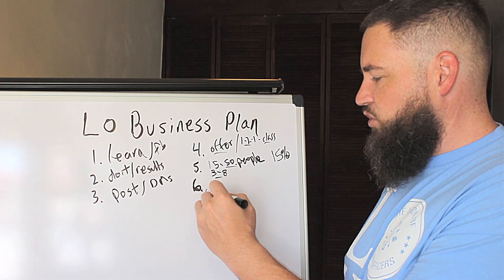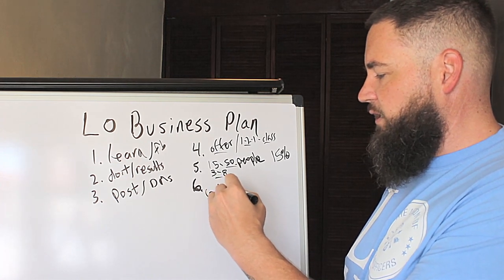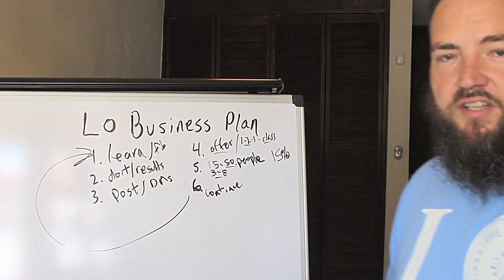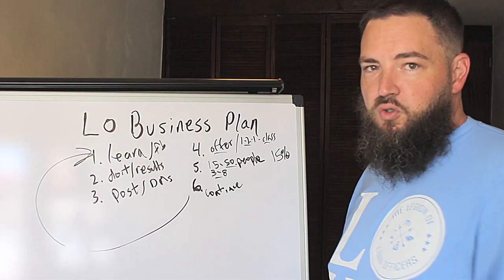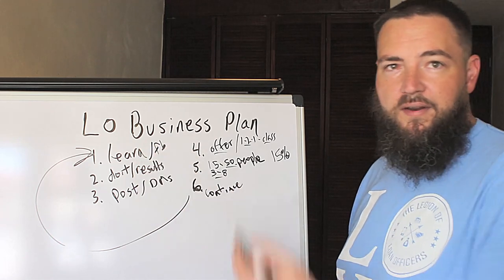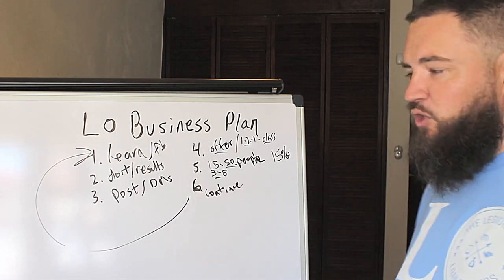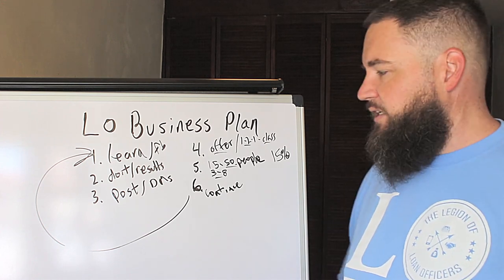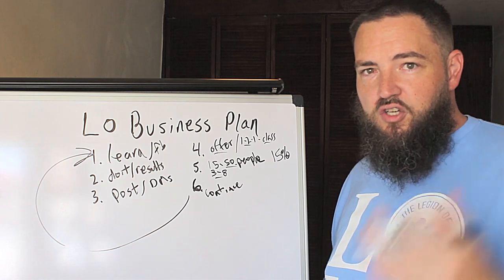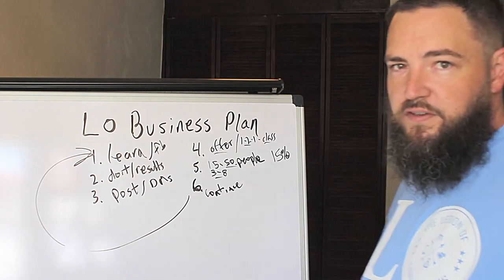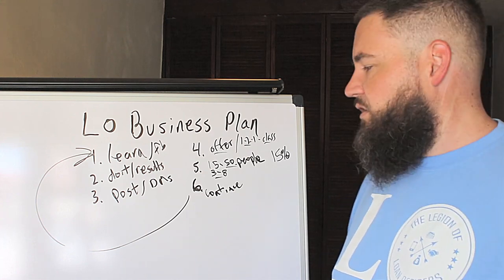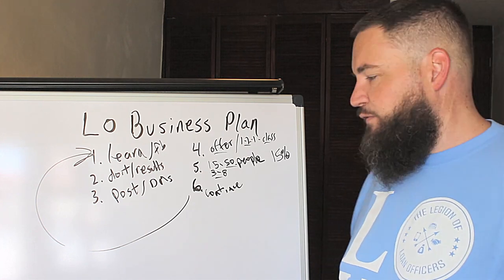Step six is we're just going to continue to grow. You can just come back around and start that same process again — go learn some new stuff, put it into practice, get some results, post about it, get people excited, and then go host an event. For your events, you could do it at a real estate office, your office, a title company, a restaurant that has a room in the back — there are lots of different places and ways to host events today for free.